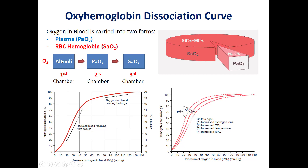First, the alveolar sac is rich in oxygen. There will be an exchange with the capillary, which contains the blood. The oxygen will pass from the alveoli — the first chamber — to the plasma — the second chamber — and then from there into the hemoglobin inside the red blood cells.